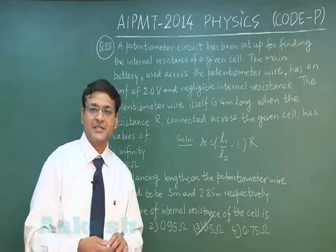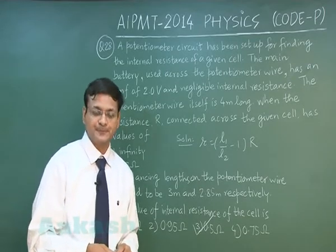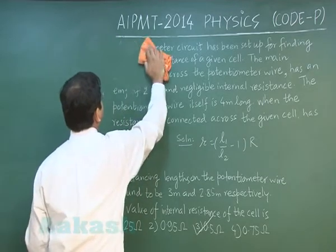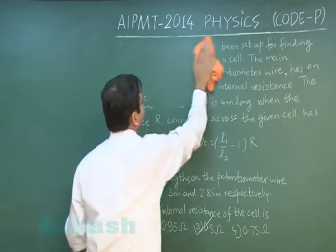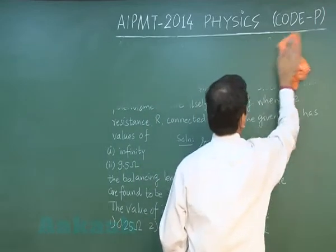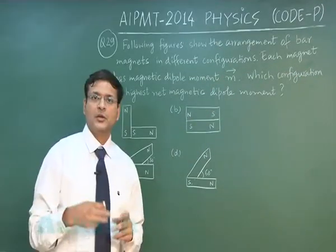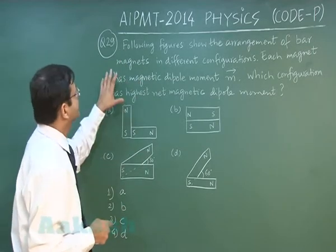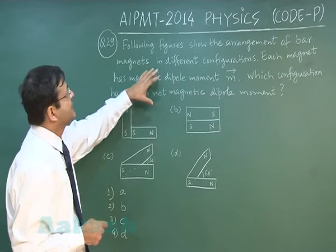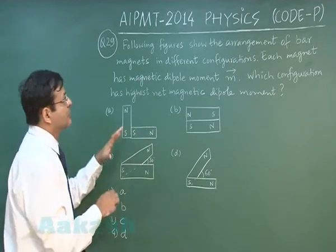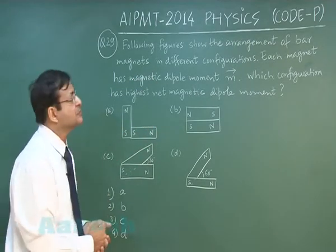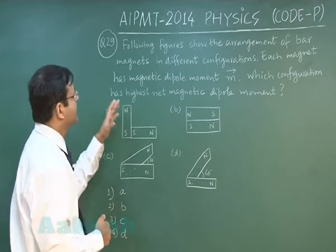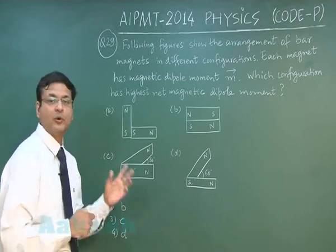Now let us discuss the next question, that is question number 29. The question reads: following figures show the arrangement of bar magnets in different configurations. You have been given these diagrams. Each magnet has magnetic dipole moment m. Which configuration has highest net magnetic dipole moment?